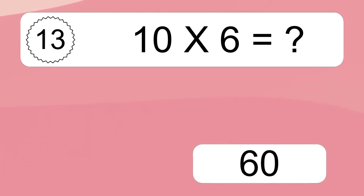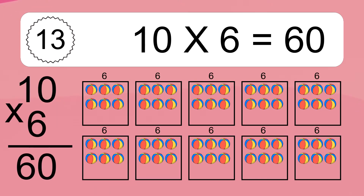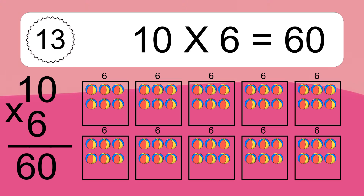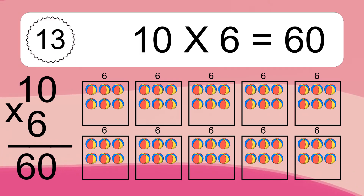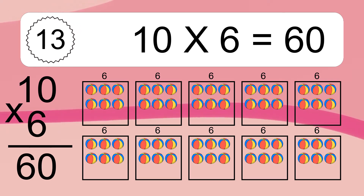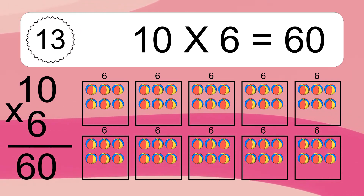10 times 6 equals what? 10 times 6. We have 10 boxes, and each box has 6 colorful balls inside. If you count all the balls in all the boxes together, you will have 10 times 6 balls. This equals 60 balls.